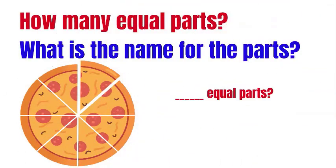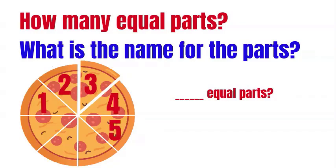How many equal parts and what is the name for the parts? We've got one, two, three, four, five, six, seven, eight parts. How many equal parts do you see? Eight parts. And what do we call eight parts? Eighths.